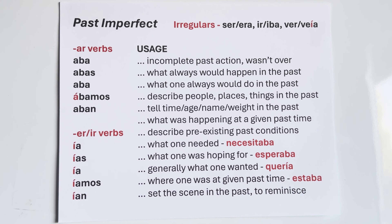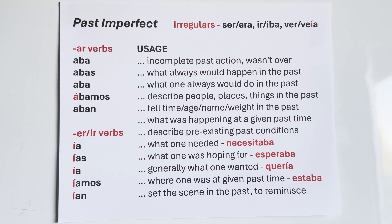It's the second of our two past tenses: past preterite for a completed past action — it's over, it's done — and past imperfect for an incomplete past action. The endings for AR verbs: aba, abas, aba, ábamos, aban — accent on the A of ábamos because it's stressed three vowels back.